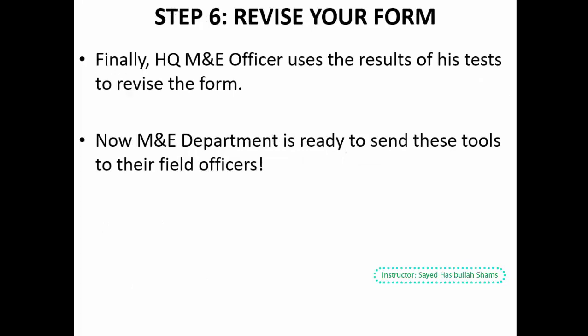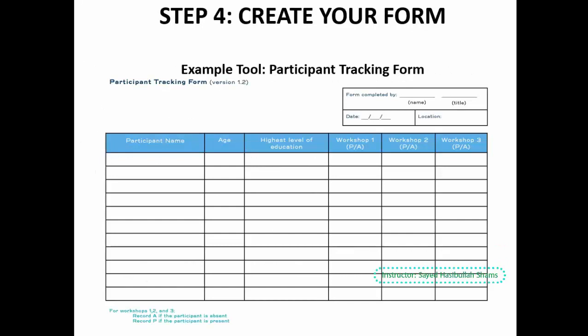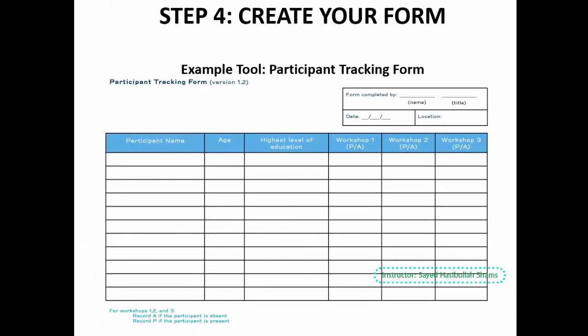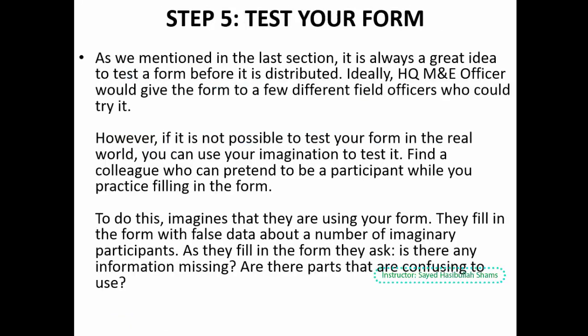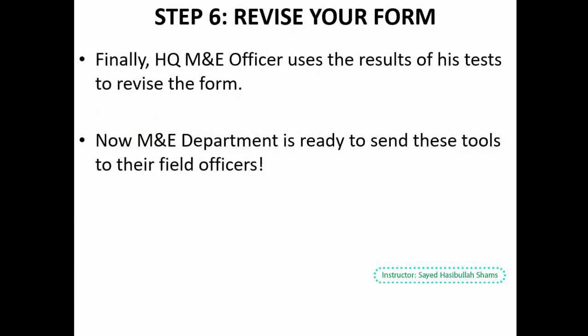Step six is: revise your form. For example, if we found in the form that there is a need for a signature from each participant at the end of the page, and we also missed mobile number, email address, and the location from which part of the country they participated in the workshop, we can revise this information. After revision, you can send this form to the field for data collection purposes.